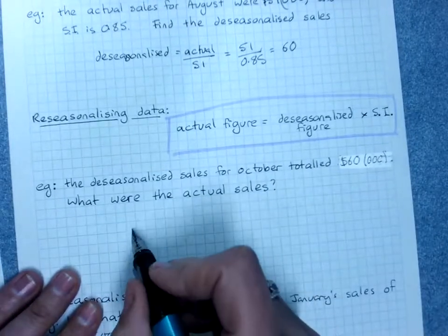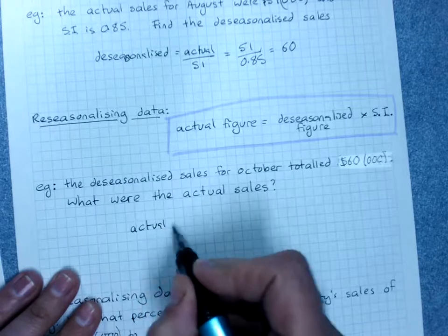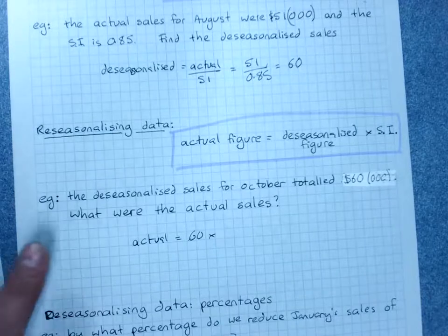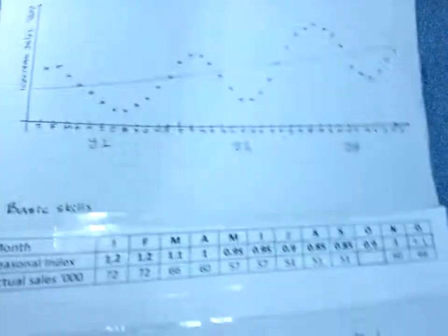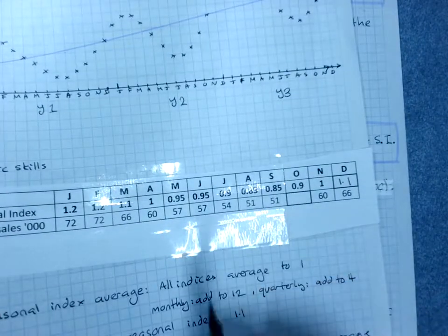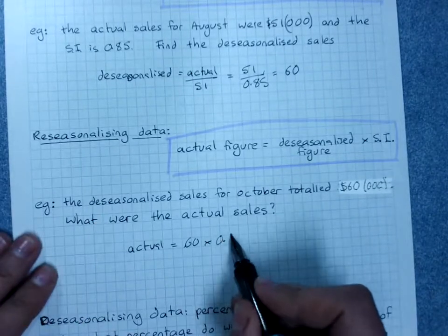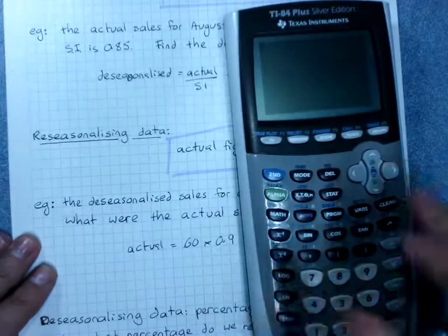So our actual sales was 60 times the seasonal index. Now that's for October, and October has a seasonal index of 0.9. Grab our calculator.